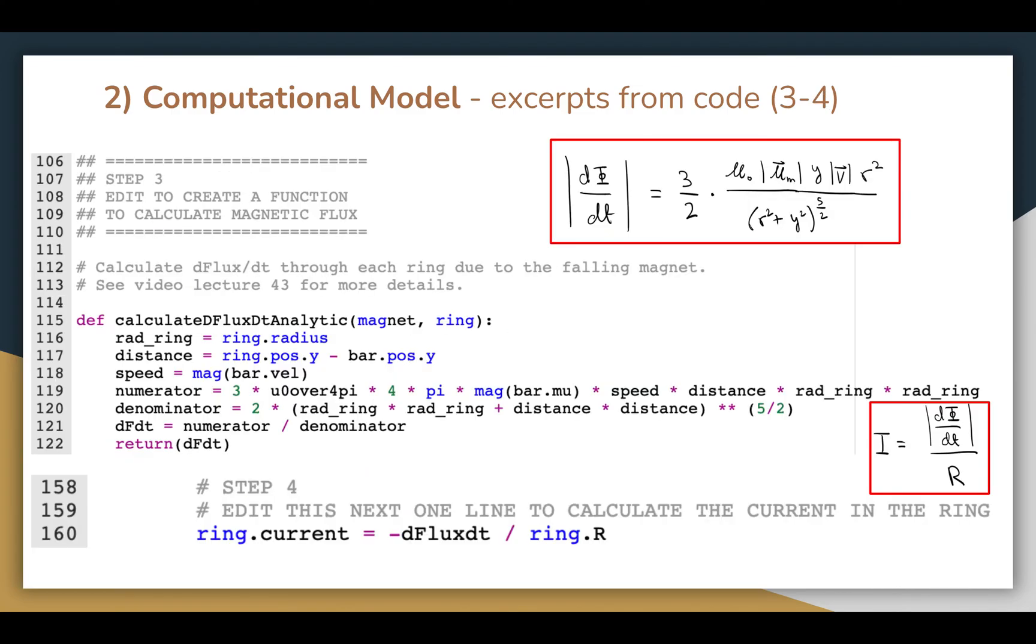In step 3, I calculate the time derivative of flux using the formula shown at the top, and in step 4, I find the current through a single ring of the tube using the formula shown at the bottom.